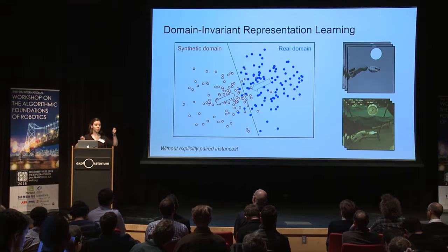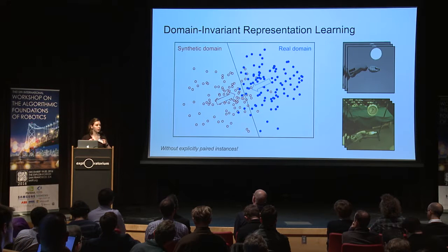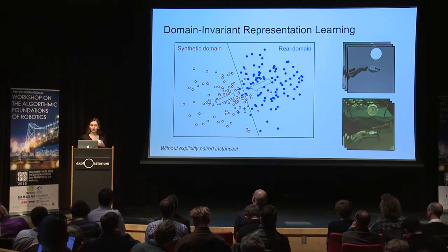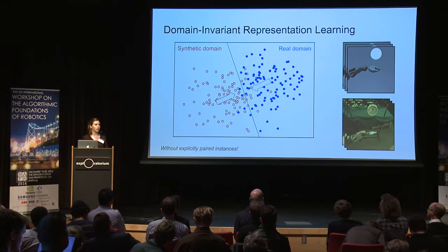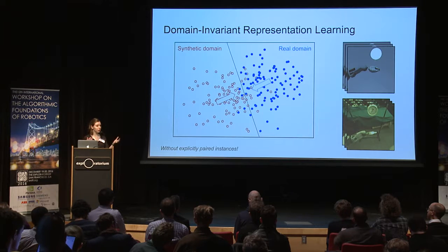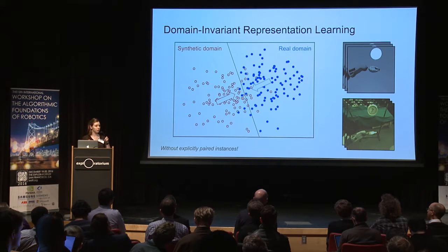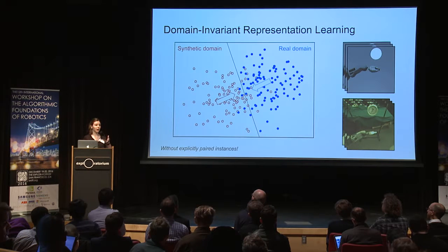If you know which examples are paired together in both domains, you can use metric learning, Siamese networks, or some other approach. But instead, we're going to learn a representation that's invariant at a distributional level. If we know that pairs should exist between our domains but we just don't know which images are paired, we can treat the pairing as a latent variable and optimize over it.